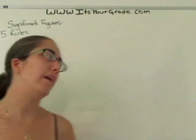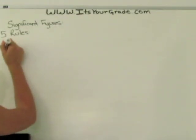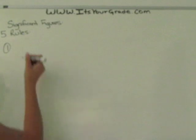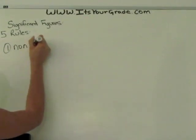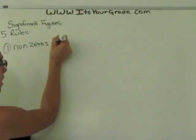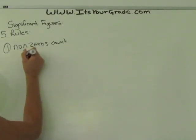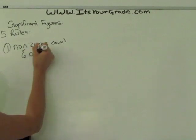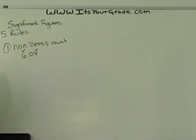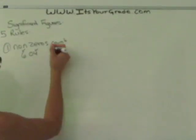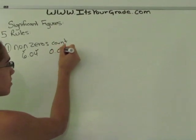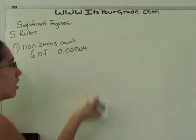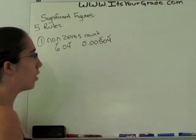There are five main rules to keep in mind. The first rule is that all non-zeros count. So if you have the number 6.04, the 6 is a non-zero and the 4 is a non-zero, so they're considered significant. If you have the number 0.00504, again, the 5 is a non-zero and so is the 4. So those are significant numbers.